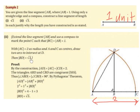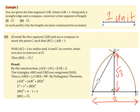The distance from B to D is root 3. Here is the proof: by the construction, AD equals AC equals 2 — they are radii from centre A. Similarly, CD equals AC equals 2 — they are radii from centre C. So AD, CD, and AC are all equal to 2 units.